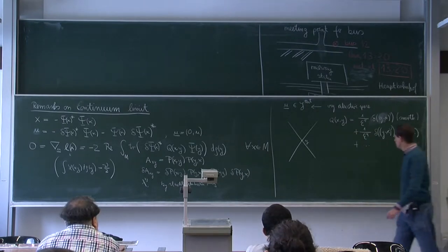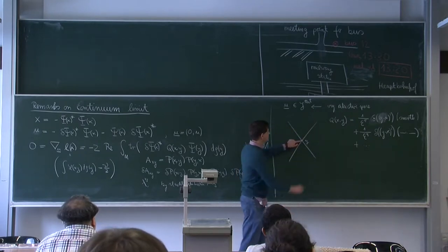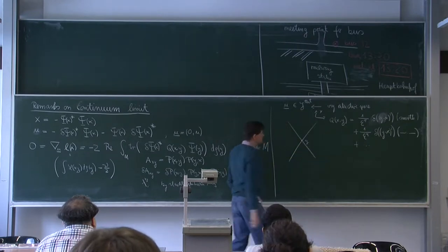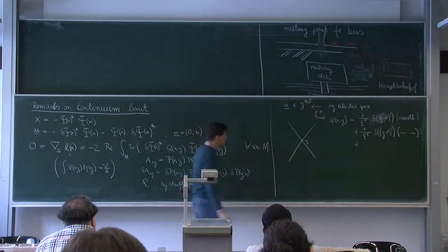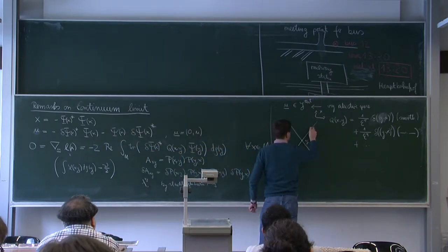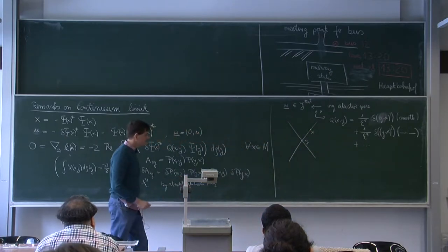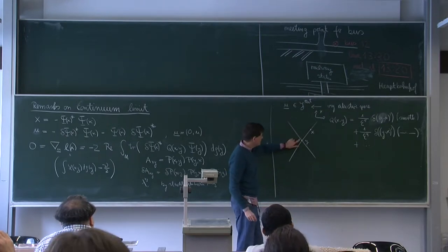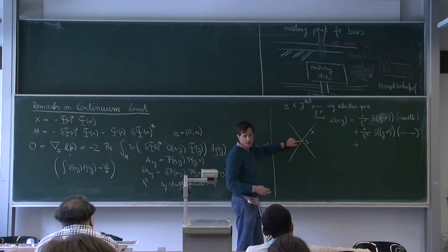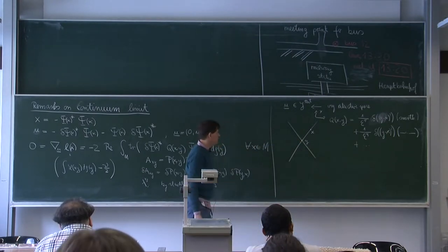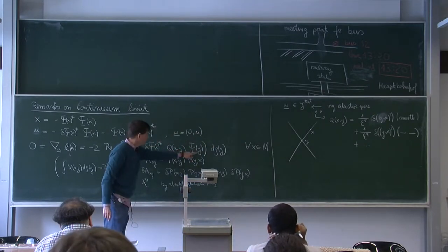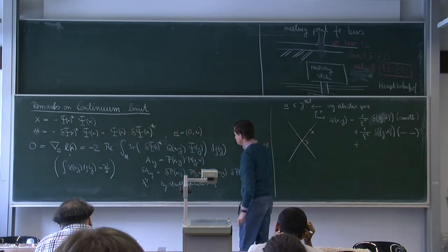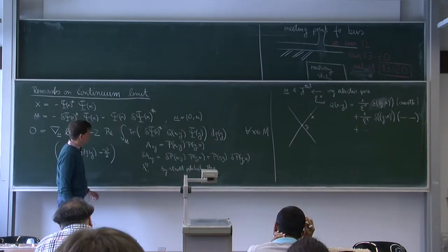Once we have that, suppose y is fixed and I plot x — then I have these divergences on the light cone. I want to focus on x lying on the light cone, because this is where everything takes place, but I want to stay away from y, because at the origin there are additional singularities which are impossible to control.